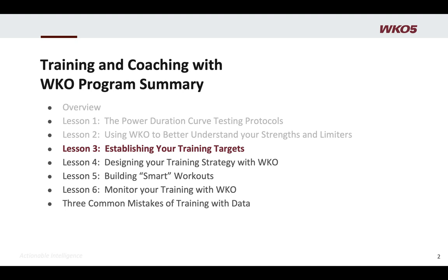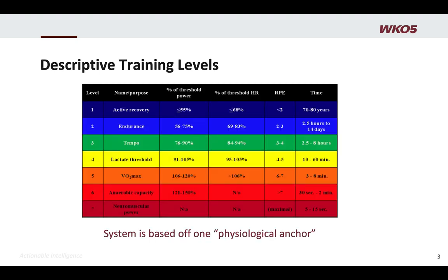Let's talk a little bit about training targets and this idea of training zones. When most of us got into power training, we very early established the fact that there are some classic training zones out there. This is the Coggan Classic Training Zones on the screen — these are excellent descriptive training levels. Basically, it's taking the measurement of your threshold, or your Functional Threshold Power or FTP, and then using a percentage-based system — a percentage of that threshold power — to establish generalized training targets, training levels, training zones.